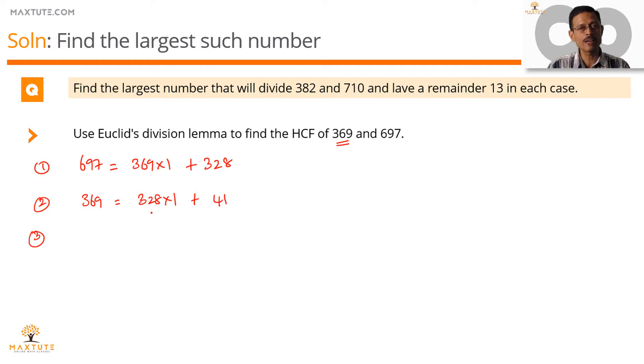This time, the lemma will be applied on 328 with 41 as the divisor. 328 equals 41 times 8, which means the remainder is equal to 0. The remainder is 0. The divisor of that step is going to be the HCF. So, 41 is the HCF of the two numbers, 369 and 697.